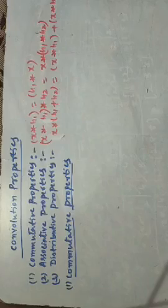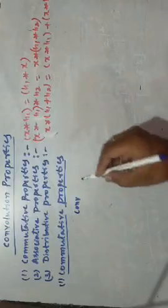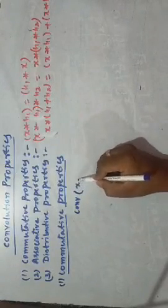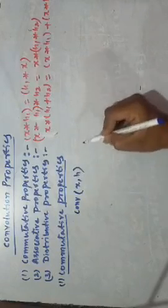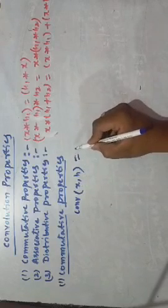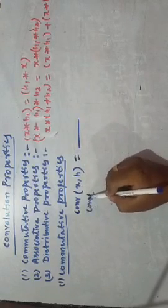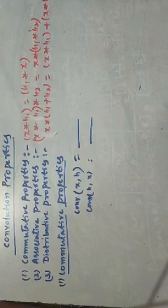First, we have the convolution properties. We take the commutative property. In MATLAB, if you write simply CONV — open bracket — and write X and H, this indicates X convolved with H. Similarly, convolution of H and X would give the same result. The code will execute the values, and if you want the theoretical calculations, we will proceed.